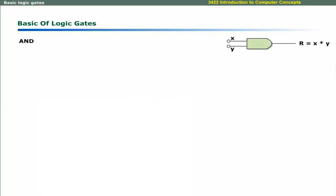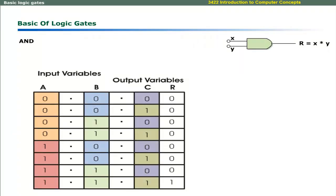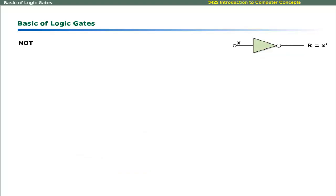The AND gate is the physical representation of the logical AND operation. It takes at least 2 input signals. This truth table represents the AND operation for 3 input variables. It is important to note that the result of logical AND is true only when all input variables are true.